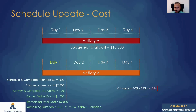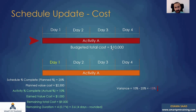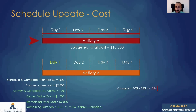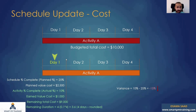We will talk about the earned value model right now. This is a very important aspect of reviewing and monitoring schedules. If I have one activity only — activity A — with a total cost of $10,000, the activity has an original duration of four days, and I want to do my update by the end of day one only.